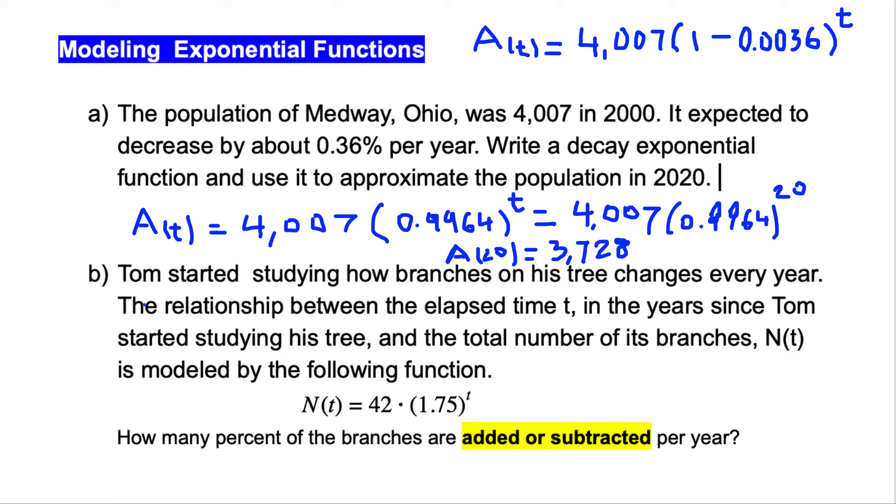Now let's go to part B. Tom started studying how branches on his tree change every year. The relationship between the elapsed time t and the total number of branches n of t is modeled by the following function. N of t equals 42 times 1.75 in exponent t. How many percent of the branches are added or subtracted?